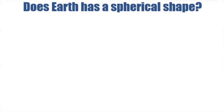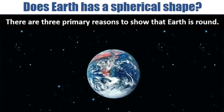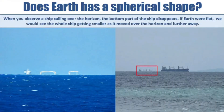Children, do you think Earth has a spherical shape? There are three primary reasons to show that Earth is round. The first reason: when you observe a ship sailing over the horizon, the bottom part of the ship disappears. If Earth were flat, we would see the whole ship getting smaller as it moved over the horizon and further away.